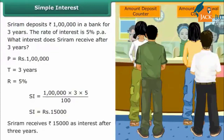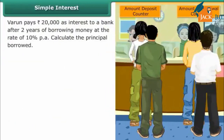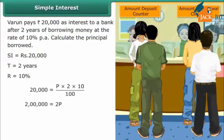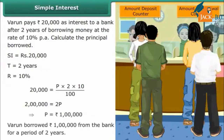Next example: calculating the principal. Varun pays Rs. 20,000 as interest to a bank after 2 years of borrowing money at 10% per annum. Substituting: 20,000 = (P × 2 × 10) / 100. Solving gives P = Rs. 1 lakh. Varun borrowed Rs. 1 lakh for a period of 2 years.